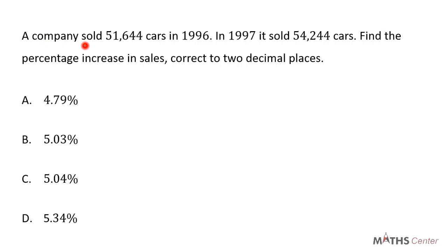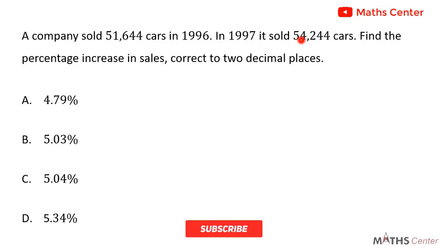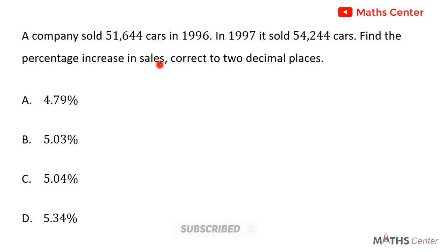A company sold 51,644 cars in 1996. In 1997 it sold 54,244 cars. Find the percentage increase in sales, correct to two decimal places.